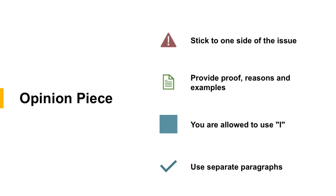Make sure you are providing proof, reasons, and examples. State your reasons, prove it, give examples from your own life, from school, from friends, family, from the news — there are lots of ways to provide proof. Then explain why that proof supports your opinion. Because it is an opinion piece, you are allowed to use "I." Make sure you designate separate paragraphs, as you are also getting marked on your writing style. Writing one big long paragraph will cause you to lose marks.